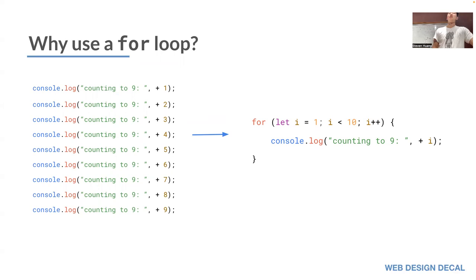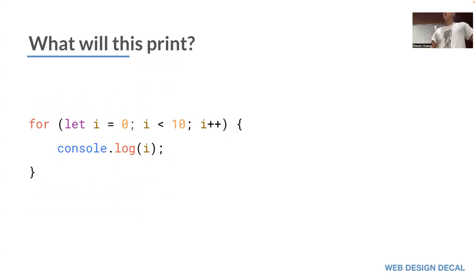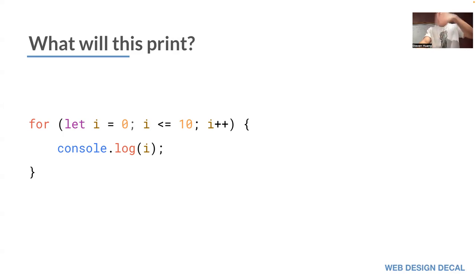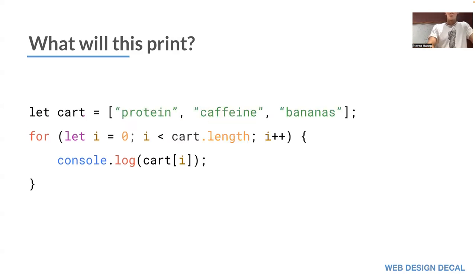This is why we use a for loop — you can take nine lines of code and condense it down into three. If you're doing 100 lines, you still maintain just three lines to print 1 to 100. The steps are: initialize the variable, check if the condition is true, execute what's inside the loop, increment the loop variable, then repeat steps two through four until the condition is false, then exit.